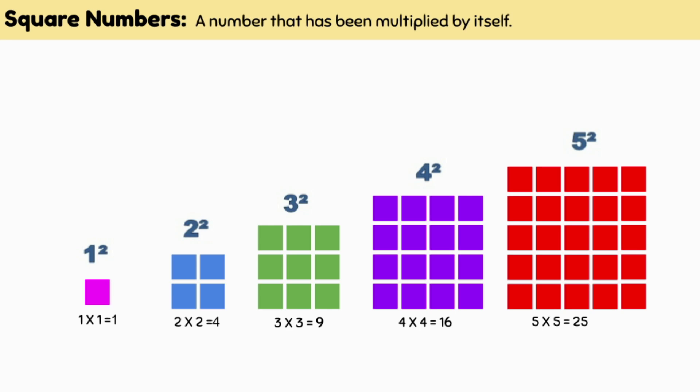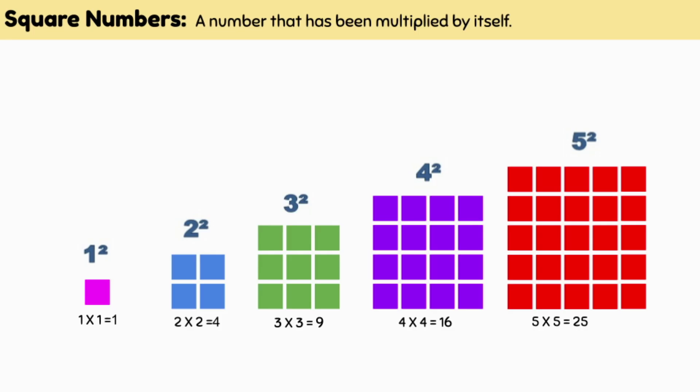A very cool thing about square numbers is that we can write them in a special way. Instead of writing out the whole number sentence, we can write the number and put a small little 2 in the top right corner. This basically means that we are multiplying the number by itself.